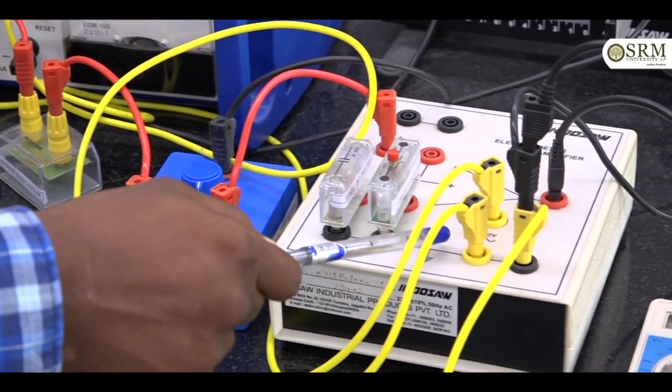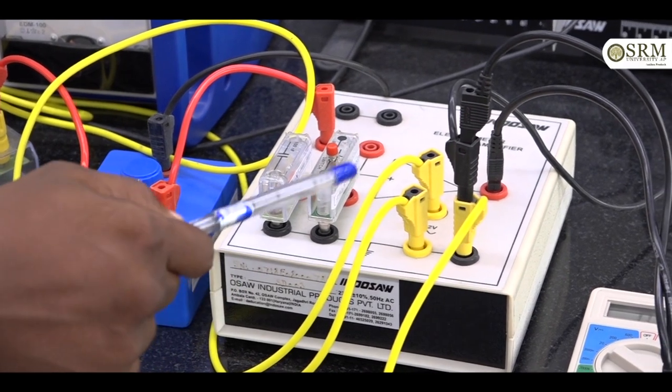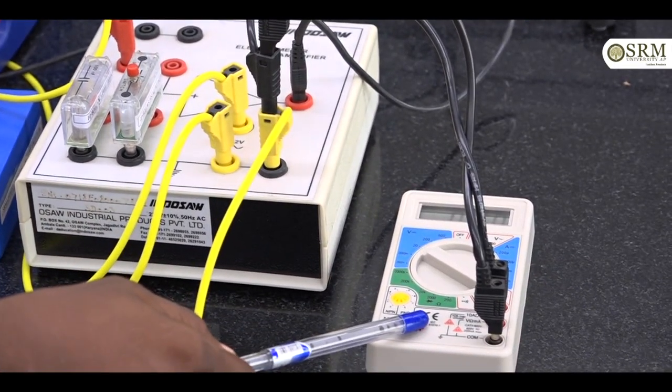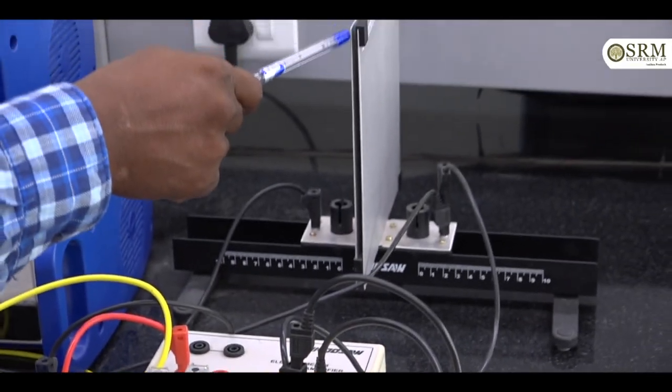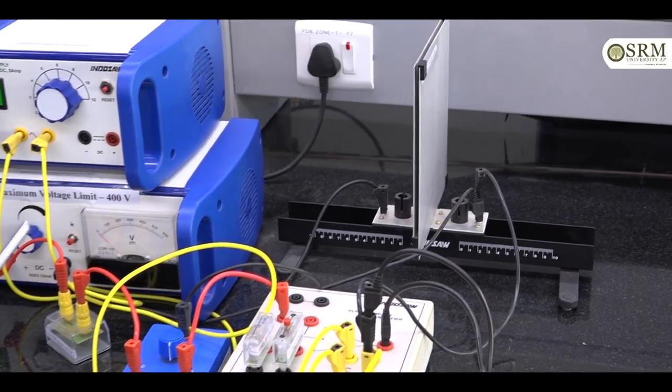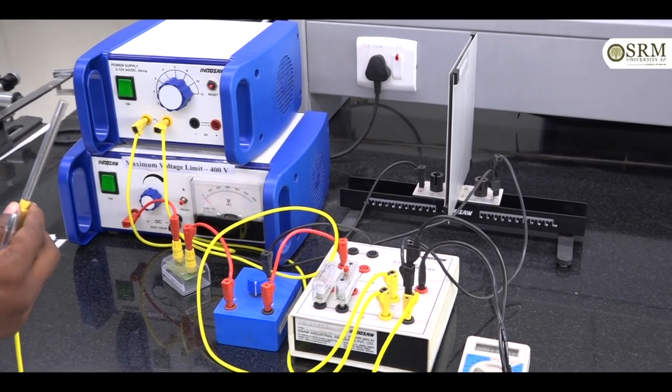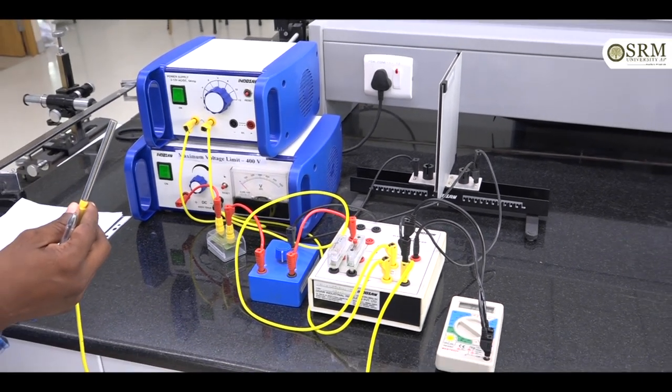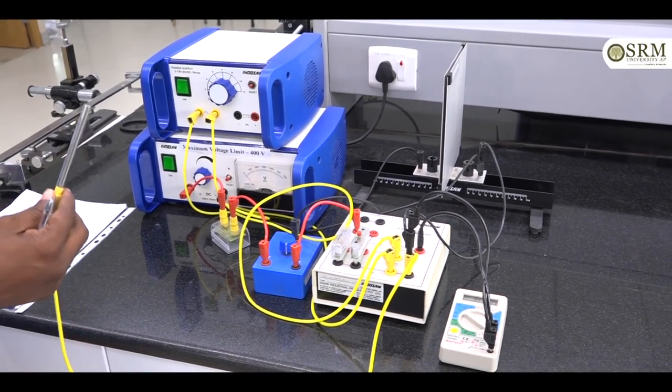Electrometer amplifier, multimeter, parallel plate capacitor and discharging rod. This is apparatus required for the dielectric constant experiment.